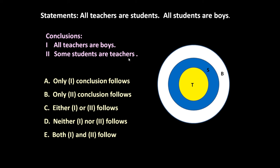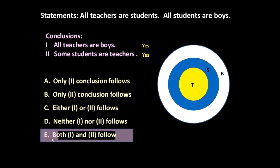Now for the conclusions. First: 'All teachers are boys' — yes, it follows, since teachers are inside students who are inside boys. Second: 'Some students are teachers' — yes, it also follows, since all teachers are students, so some students are teachers. Both conclusions follow, so option E — both one and two follow — is correct.